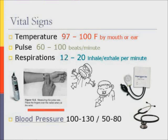Once you find your pulse, count the beat for one full minute. You can get an approximate pulse by counting for 30 seconds and multiplying by 2, or by counting for 15 seconds and multiplying by 4. A normal adult pulse is 60 to 100 beats per minute.